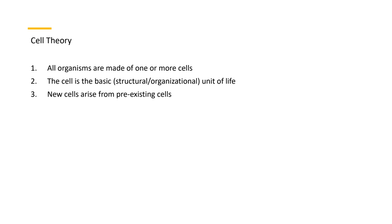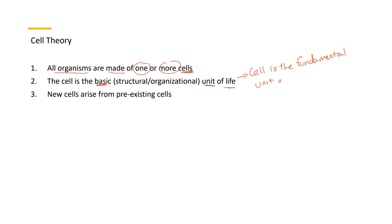Number one: all organisms are made of cells. They're either one cell or more, but they're all made of cells. Number two: the cell is the basic unit of life — the fundamental unit of structure and function in living things.